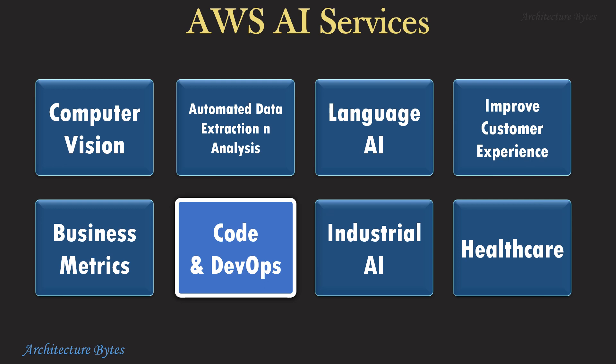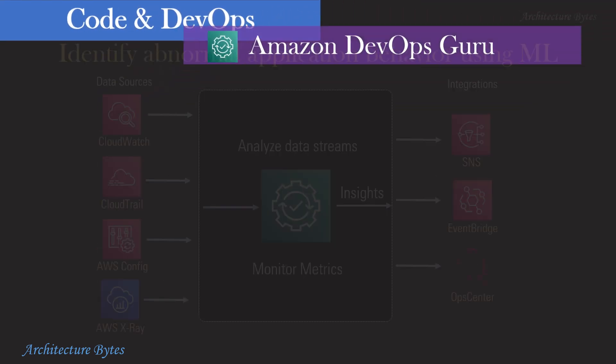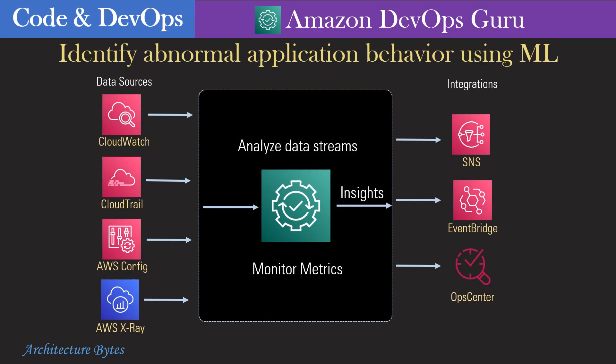Next, let us look at the category Code and DevOps. Here we have Amazon DevOps Guru, CodeGuru Reviewer, and Profiler. Amazon DevOps Guru is a machine learning powered solution that analyzes data from cloud services such as CloudTrail, CloudWatch, AWS Config, and X-Ray, and identifies anomalies, thus enabling IT admins to be notified about them in time. Instead of using multiple tools, it provides a single console dashboard to visualize and search anomalies.